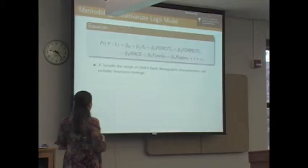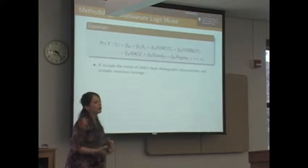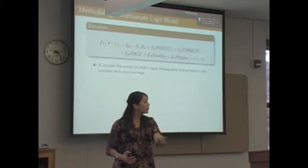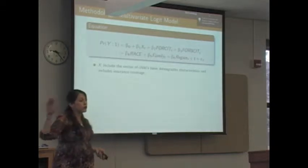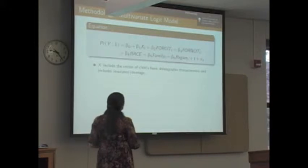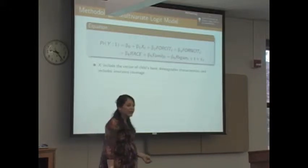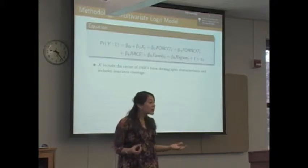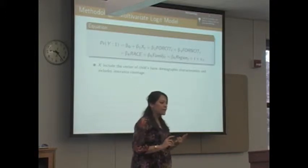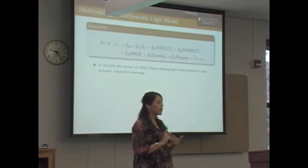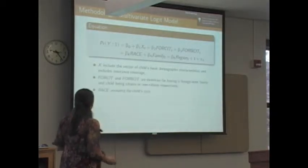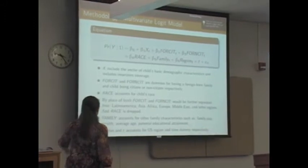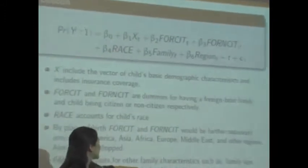What we're going to try to compare is the baseline group — children with U.S.-born parents or U.S. family — compared to those children who are citizens or non-citizens with an immigrant family. We're also going to take into account race, family characteristics such as family size, income level, employment status of their parents, whether the child has Medicaid or insurance, region, average age in the family, and parental education.